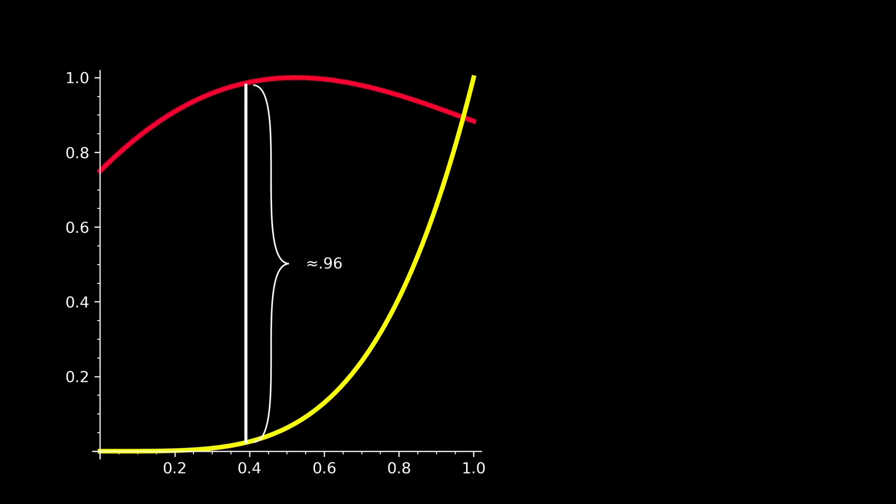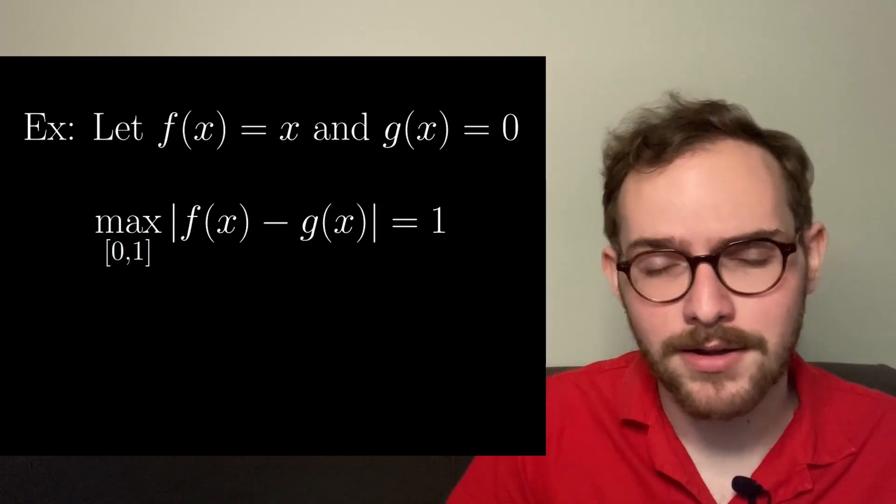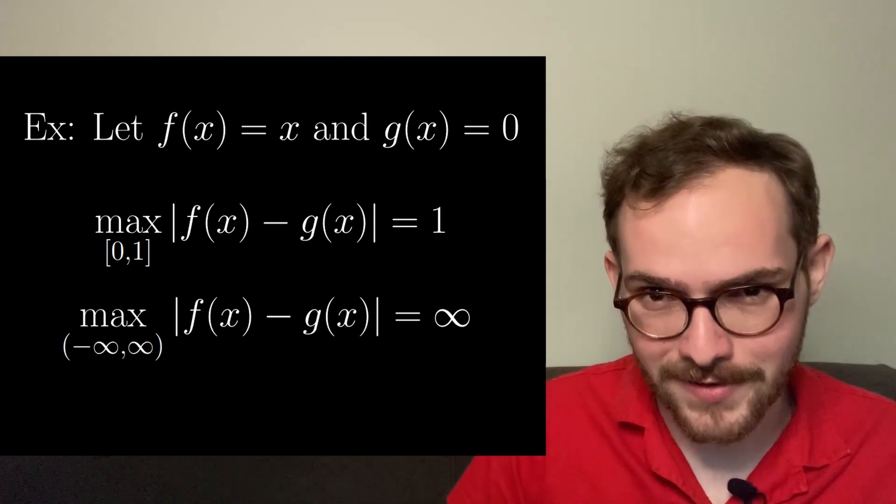A really nice one for our purposes is called the L infinity distance. Here, the distance between two functions is just the maximum vertical distance between their graphs. And conveniently, there's a really nice formula for this. It's just the max absolute value of f minus g of x. Importantly, we're focusing just on the interval 0, 1. Otherwise, this distance might not really make sense because it could blow up to infinity.